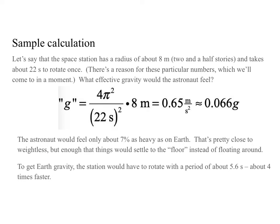If we wanted to get to Earth gravity, we'd reverse this and set g to 9.8 and solve for T, and we'd find that the period is about 5.6 seconds — considerably faster, just about 4 times faster, which is not surprising because since this is about a sixteenth, but we have a T squared, we get the factor of about 4.